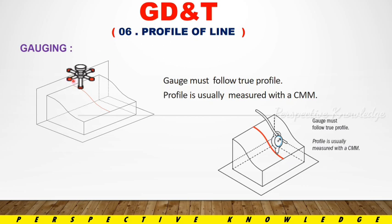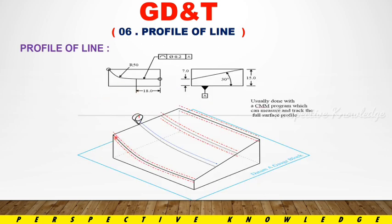Here we have to check the profile of surface. If you measure the line, you can use a straight line to read a feature. You can use all the profile of the line values as well. You can use the CAD file to compare the design. If we measure the values in the product, you can compare the values.